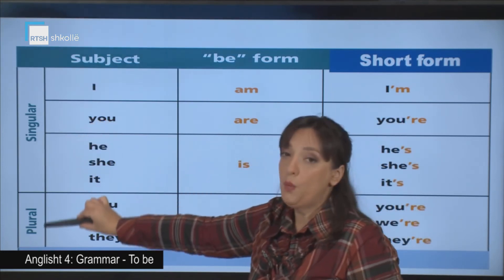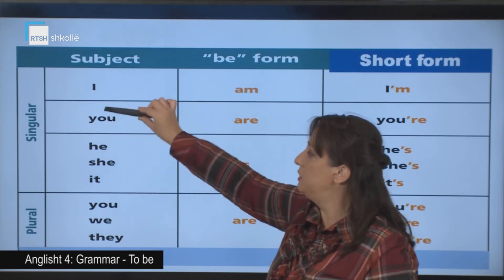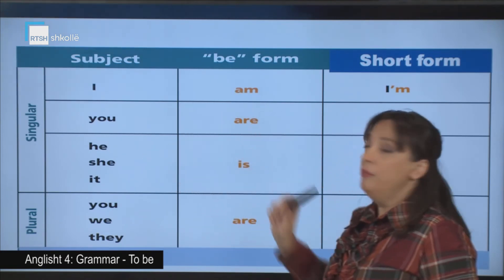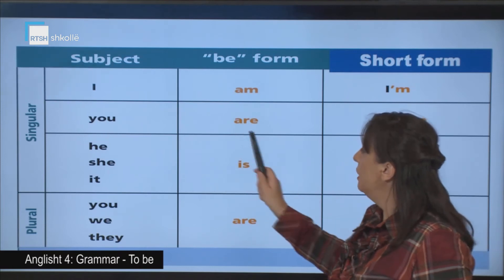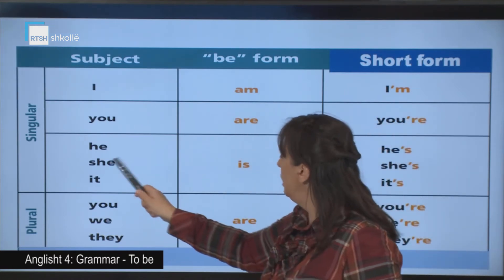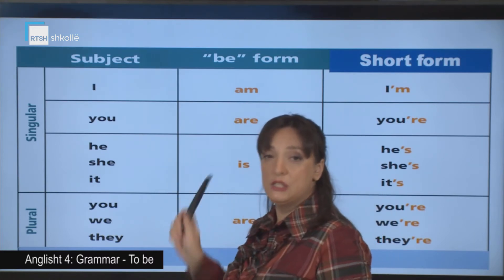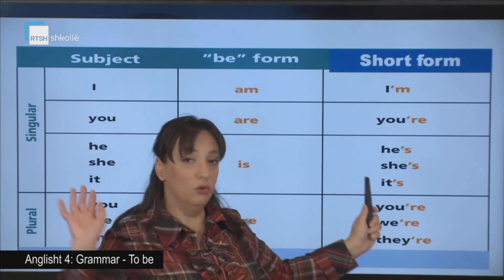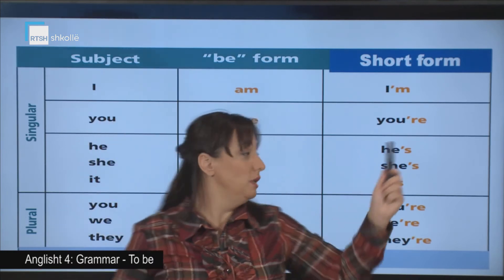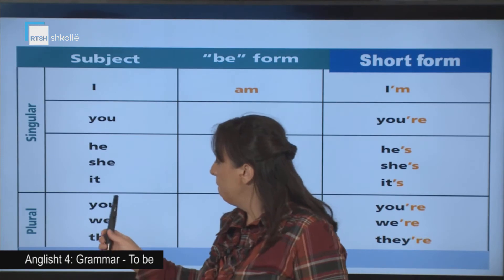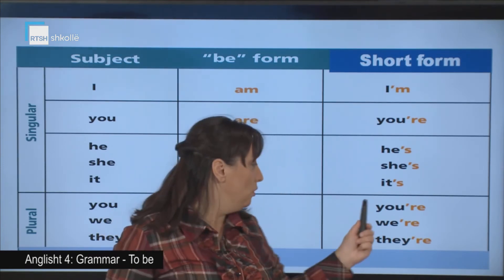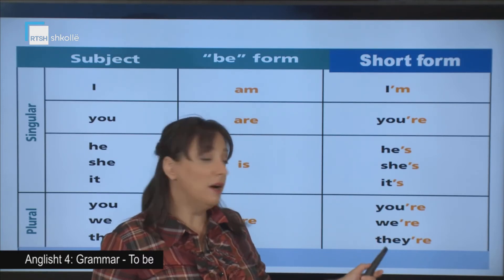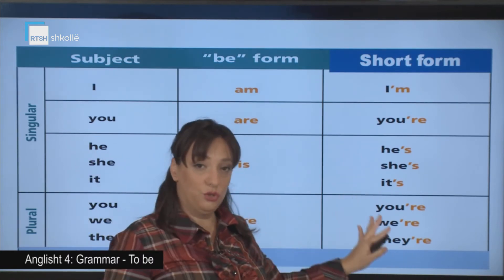Look — singular, plural. We have the persons separated. Like in Albanian, we say the three persons of the singular and three persons of the plural. 'I am' — 'I'm'; 'you are' — 'you're'; 'he is' — 'he's'; 'she is' — 'she's'; 'it is' — 'it's'. Full form, or long form, and short form — singular. 'You are' — 'you're'; 'we are' — 'we're'; 'they are' — 'they're'. Full form, short form.